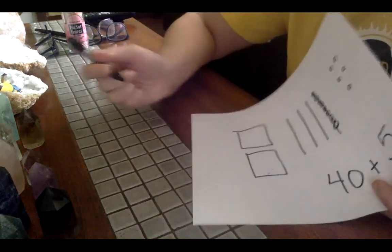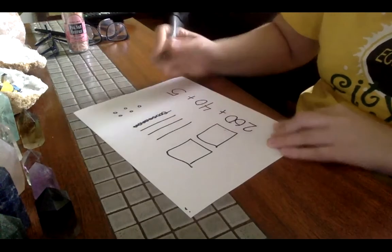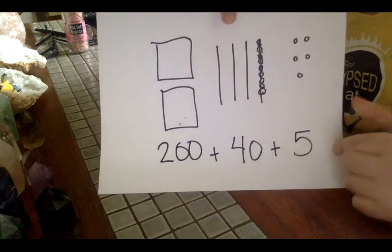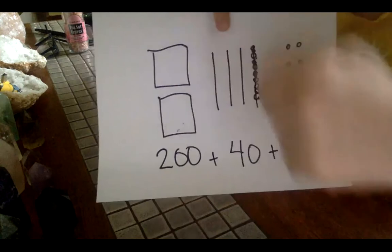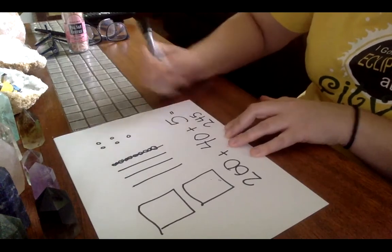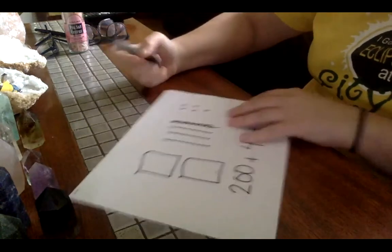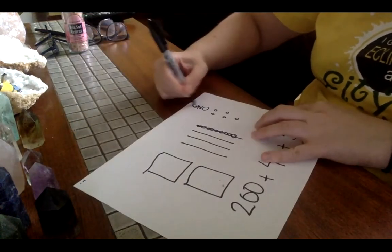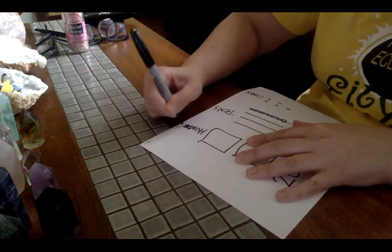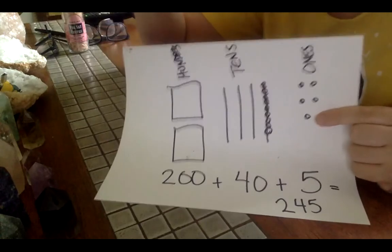And our squares are 100. We have 100, 200. When we write it like this, this is actually called expanded form. So we have 200 plus 40 plus 5 gives us 245.